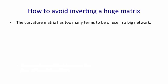The curvature matrix determines the size of those interactions. So we have to deal with the curvature. We can't just ignore it. And we'd like to deal with it without actually inverting a huge matrix, because the matrix has too many terms in a big neural net.